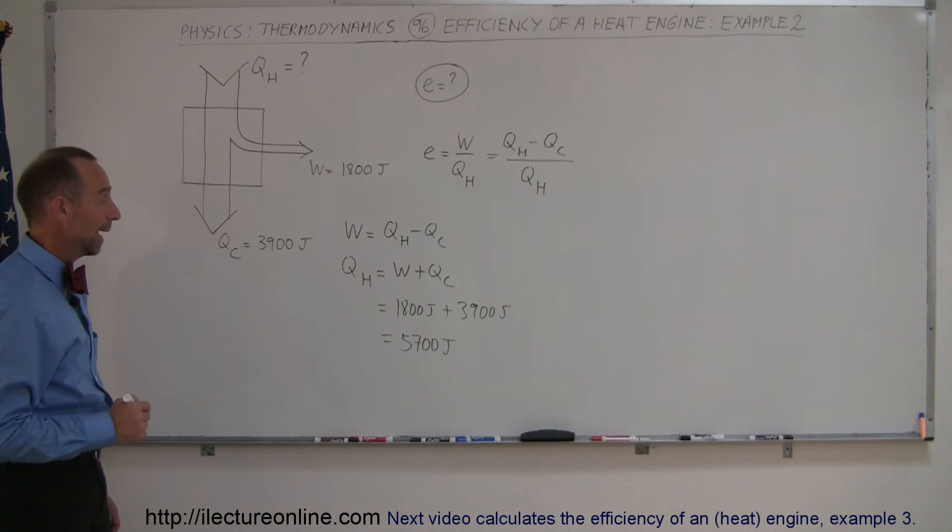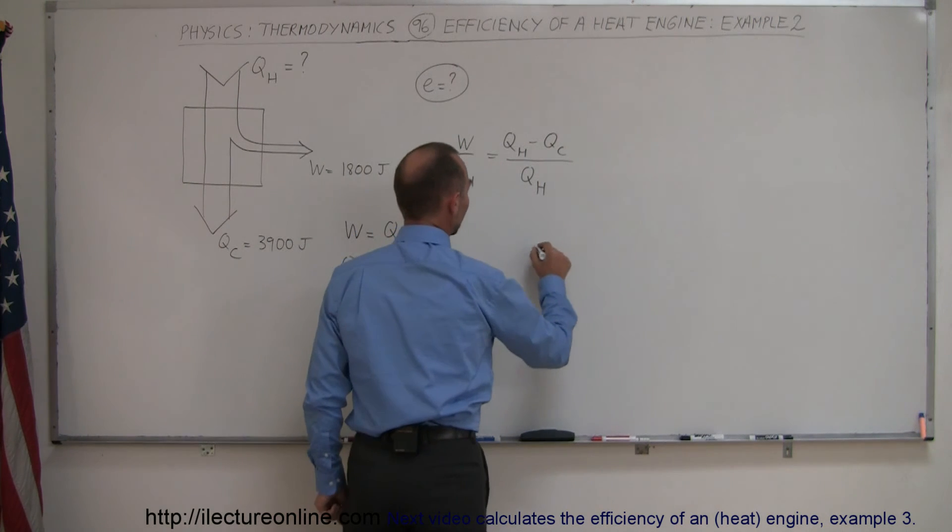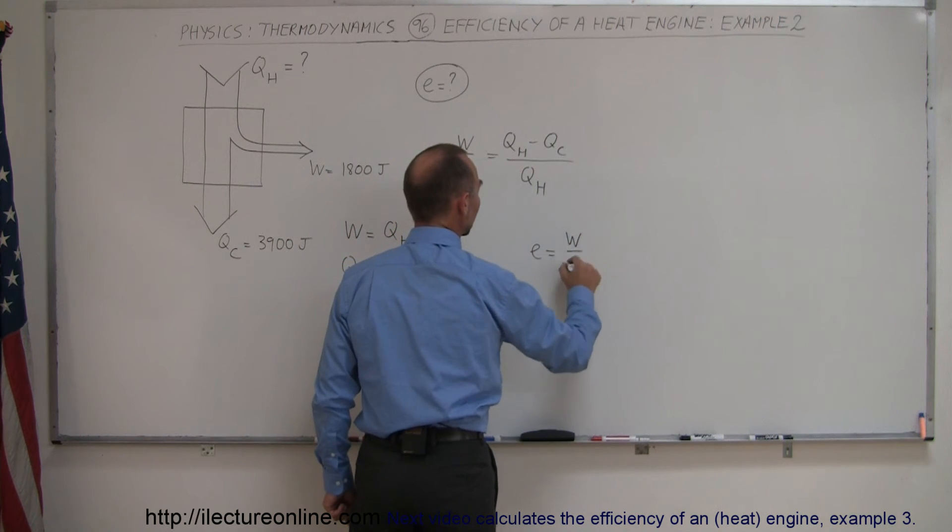At that point, we can go ahead and calculate the efficiency. The efficiency is therefore equal to the work divided by Q_hot.